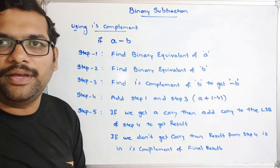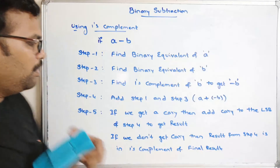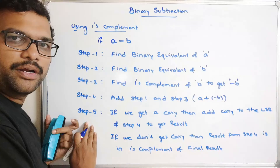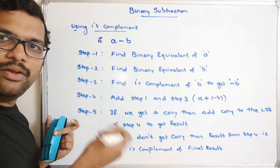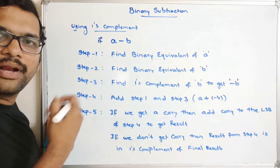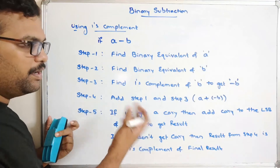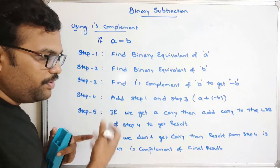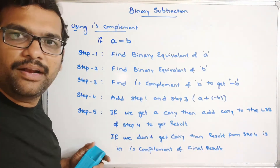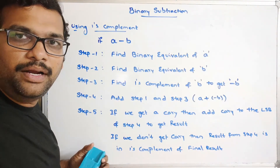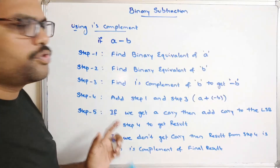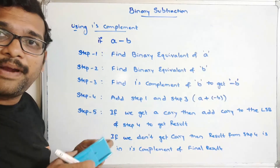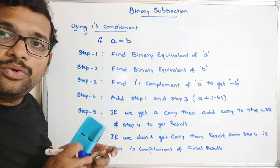It's a very simple way. All steps are common up to Step 4. Step 5 is most important — whether we are getting a carry or not. If you get a carry, simply add that to the LSB. If you don't get a carry, the result is in the form of 1's complement of the final result. Now let's see binary subtraction using 2's complement, which is also very simple and similar.